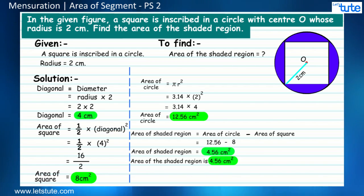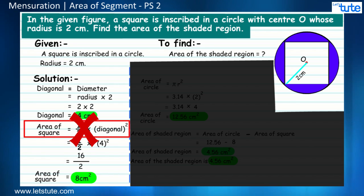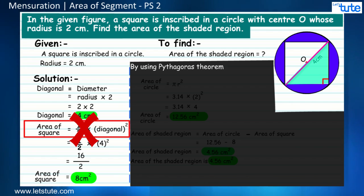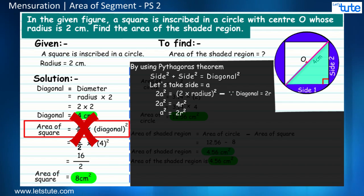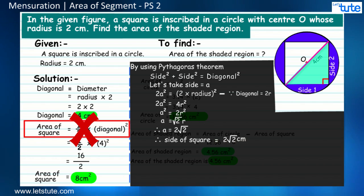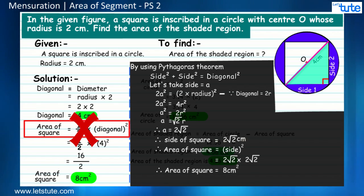Now, if we did not know the formula for the area of a square using diagonals, we could use the Pythagorean theorem. Since the angle is 90°, if the side is 'a', then a² + a² = diagonal², giving 2a² = (2r)² = 4², so a² = 8, meaning the side a = 2√2 centimeters. Using the formula for area of a square — side² — we get (2√2)² = 8 square centimeters, the same value as before. The remaining procedure is identical.